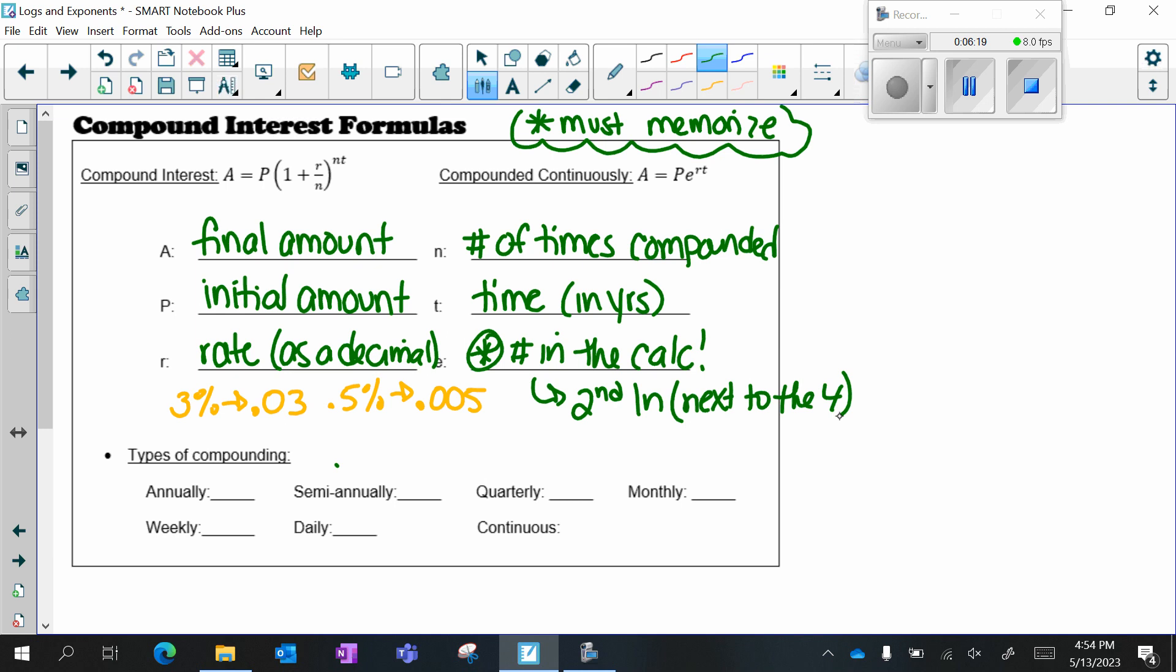So let's go over what we replace N with. So the number of times compounded is N. This is the variable N. If it says annually, we replace N with 1. Semi-annually, 2. Quarterly, 4. Monthly, 12. Weekly, 52. Daily, 365.